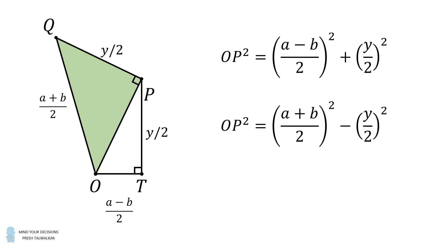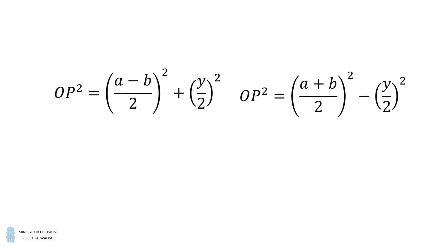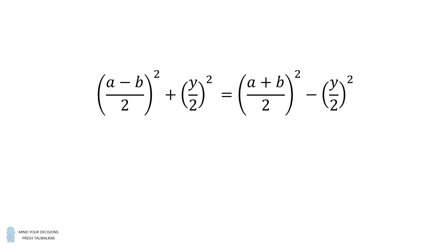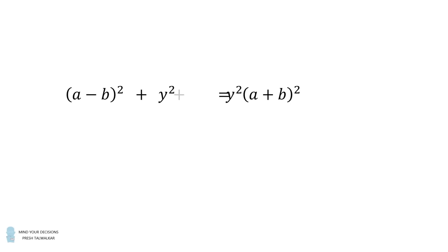We have two equations that are equal to OP squared, so we can set these two equations equal to each other. Let's do that. We will now simplify by squaring each term. Now each term has a denominator equal to 4, so these will cancel out. We will now group like terms.